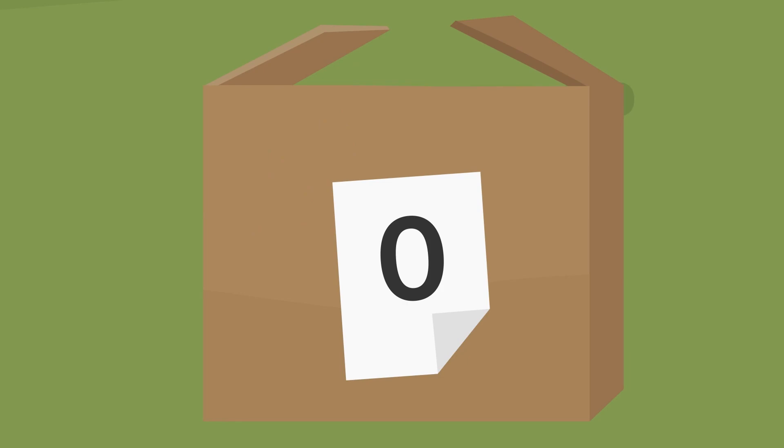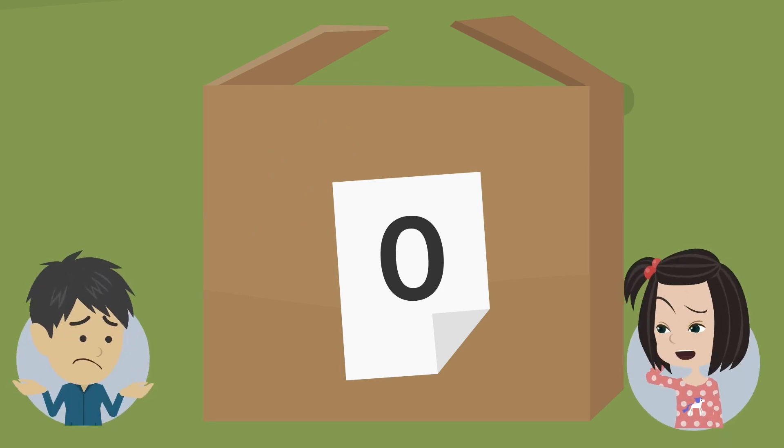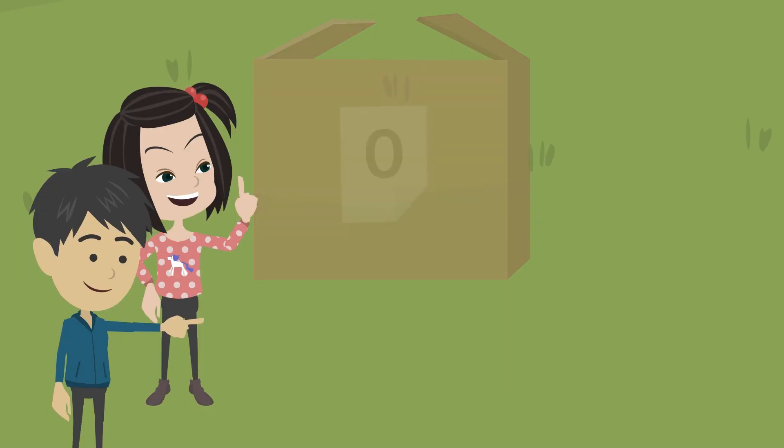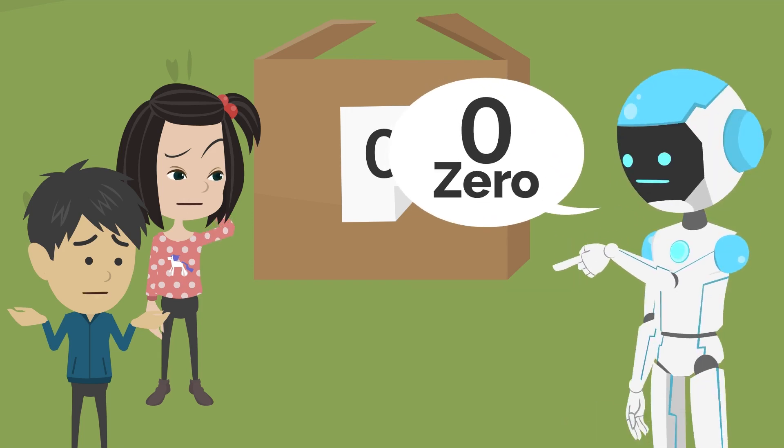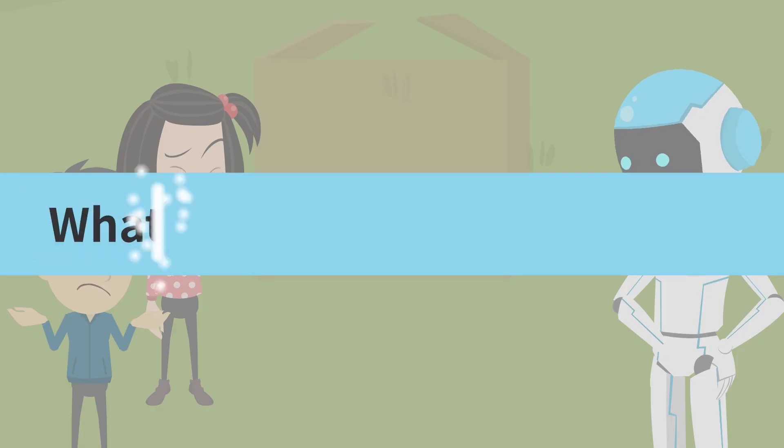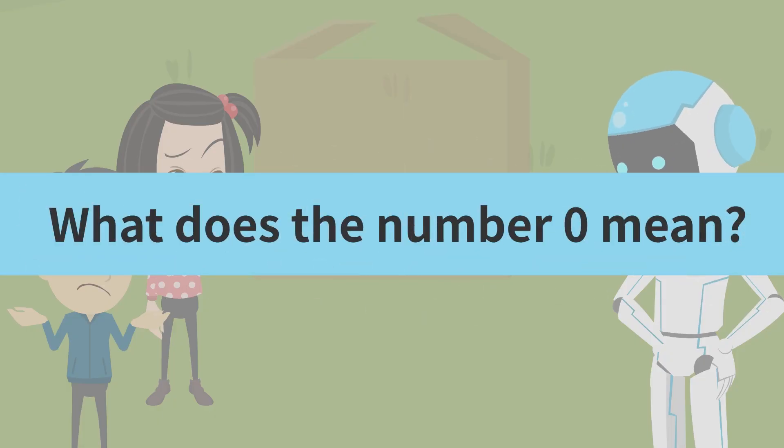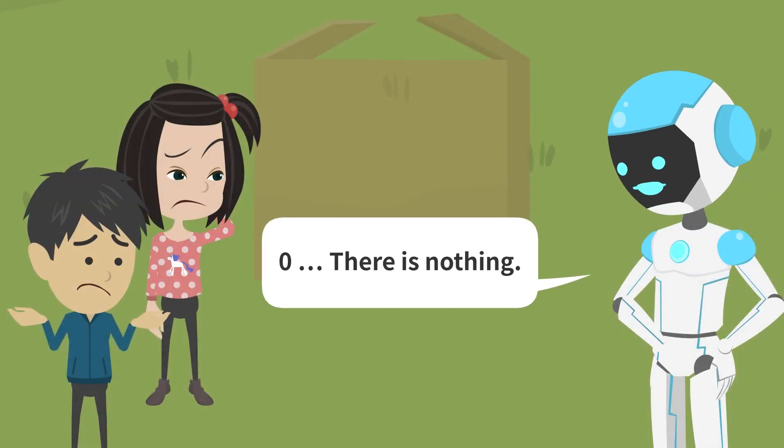Oh, there is another box over there. That box also has something like a number on it. I wonder how many onions are in that box. Let's take a look. Hey, I don't see any onions in this box. I wonder if they forgot to put them in. The number on that box is 0. 0. What does the number 0 mean? 0 is a number that means there is nothing there. Nothing.